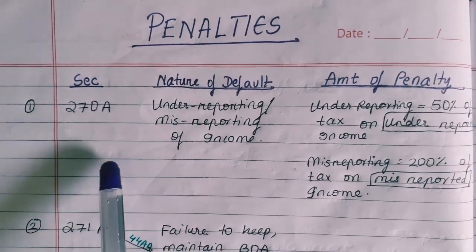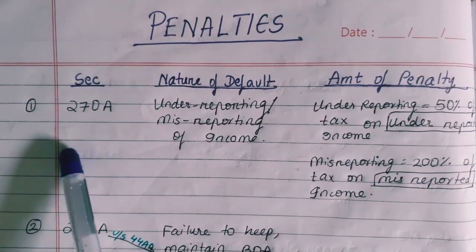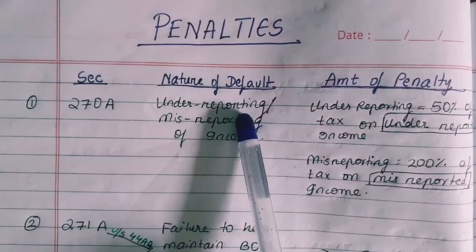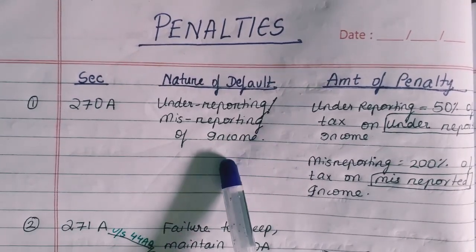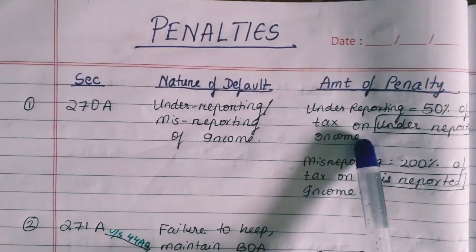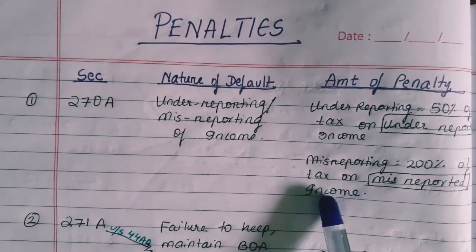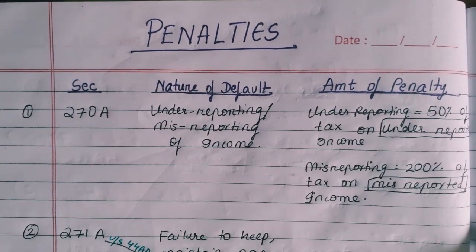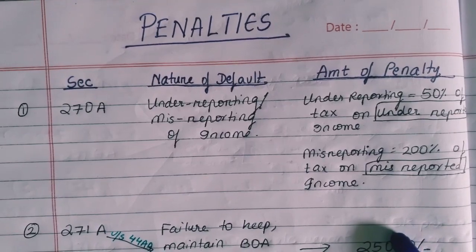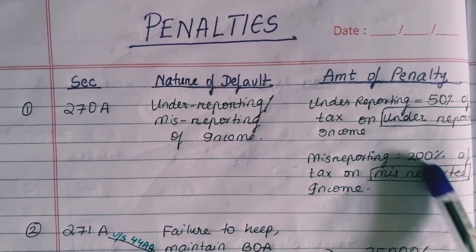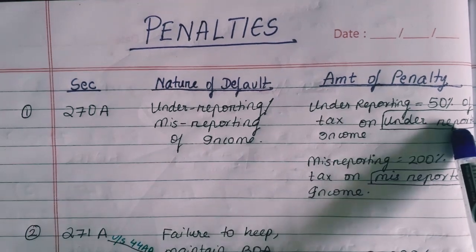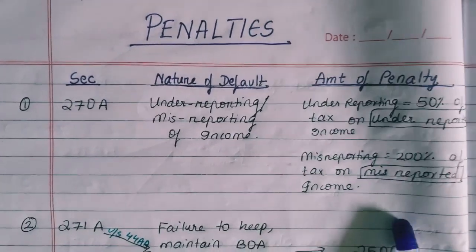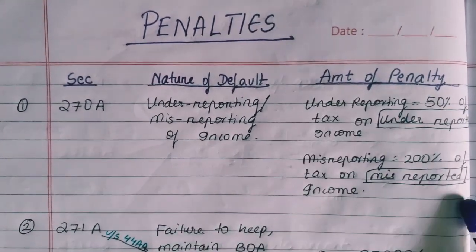Section 270A covers under-reporting and misreporting of income. For under-reporting, the penalty is 50% of tax on the under-reported income. For misreporting, it is 200% of tax on the misreported income. So if you just didn't report it, it's 50%, but if you are actively telling something wrong — misreporting — it's 200%. Remember: under-reporting 50%, misreporting 200% respectively.